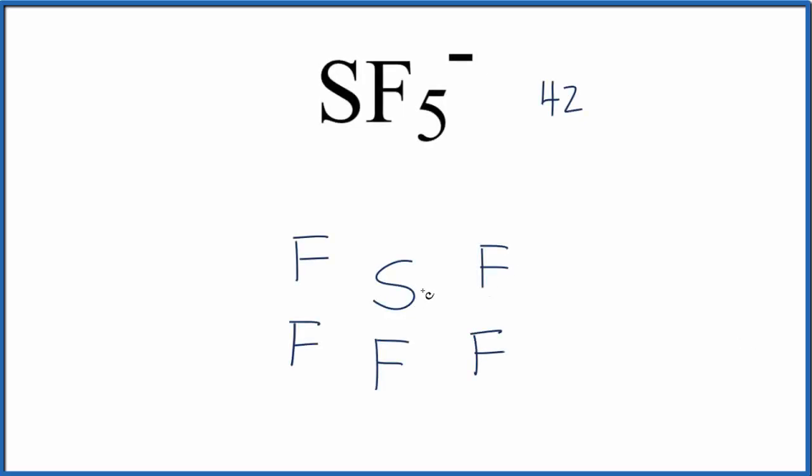We'll place a pair of electrons between each of the atoms to form chemical bonds, and I'll just use a line to show that pair of electrons. At this point, we've used a total of two, four, six, eight, ten valence electrons, and you'll note that sulfur has more than eight. That's okay. Sulfur can have an expanded octet.